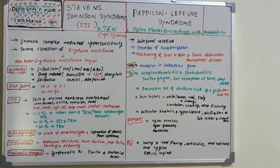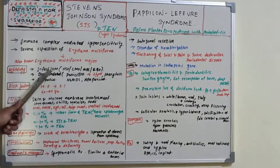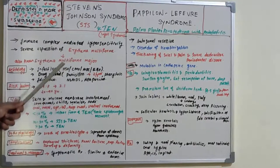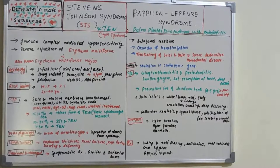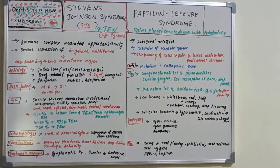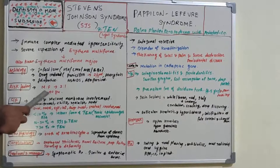This is an immune complex mediated hypersensitivity reaction where the causal factor is either infection, drug, or idiopathic. Regarding risk factors, males have more predilection compared to females at a 2:1 ratio. It is most commonly seen in people aged 20 to 40 years.